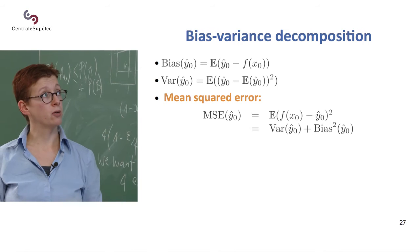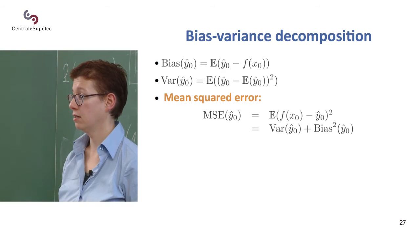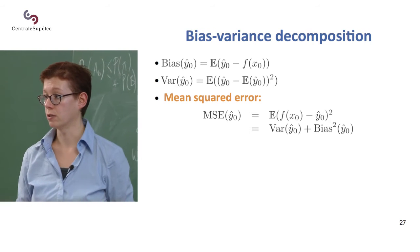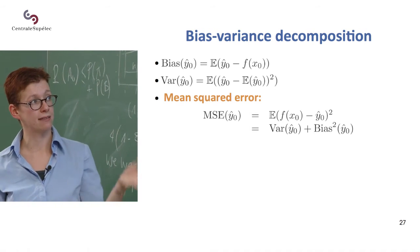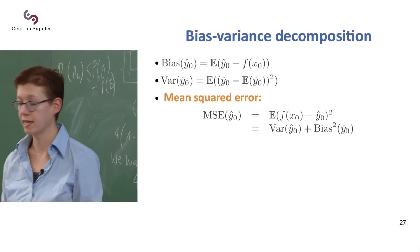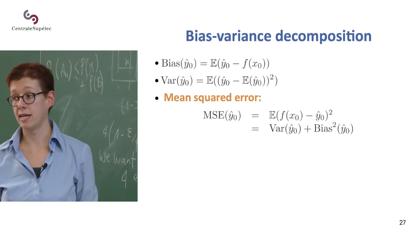Okay, and you can actually decompose the mean squared error. So the empirical error between your train set and the actual, well, your predicted and actual labels, has a decomposition between the variance and the bias.